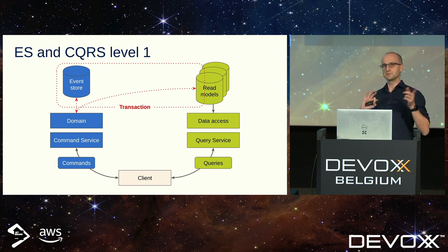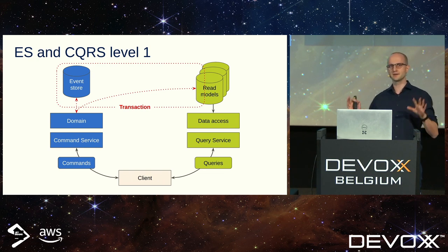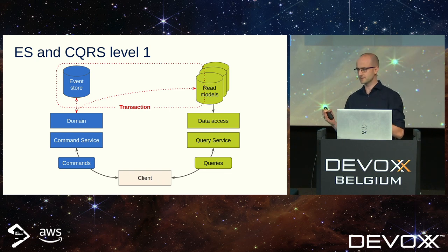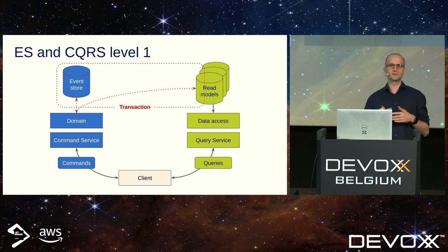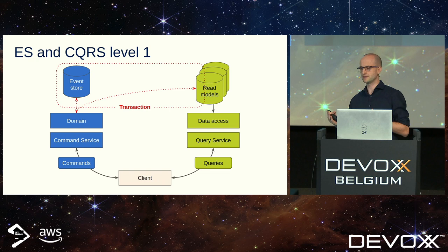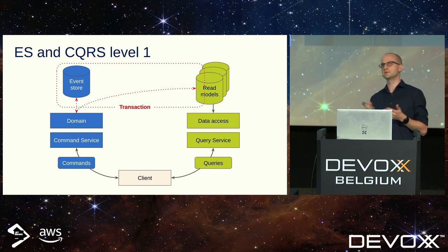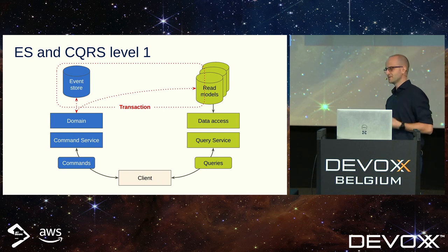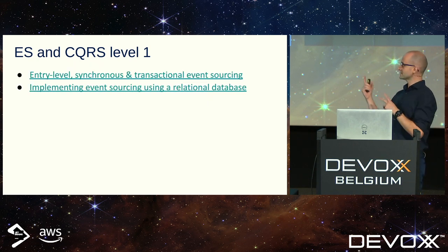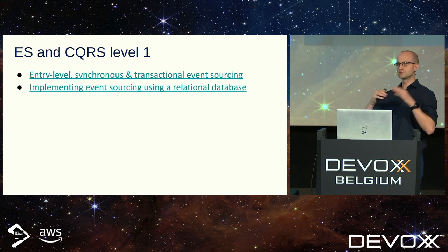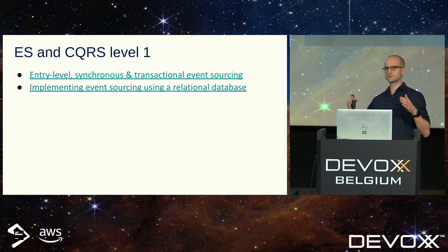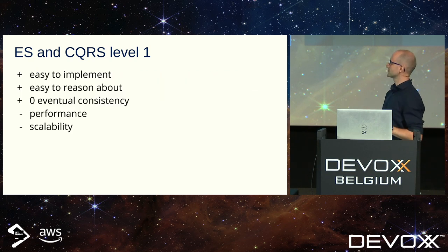I'm not saying you should never implement event sourcing this way — it's actually a quite nice starting point to play with it, especially if you are working on a proof of concept and have no idea how many people will use your application. There are a few nice articles with links on the slide about how to start and implement event sourcing based on a relational database. Quick summary: easy to implement, easy to reason about, zero eventual consistency, but performance and scalability not so great.